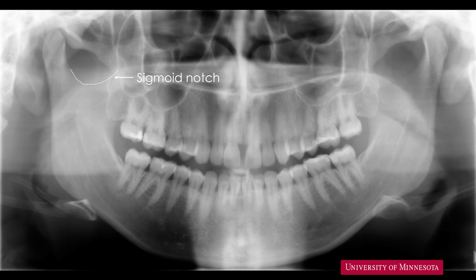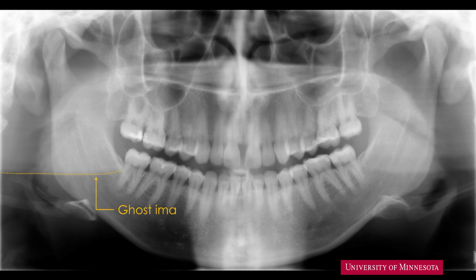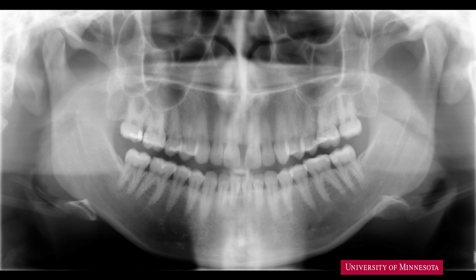The linear entity near the angle of the mandible is the hyoid bone. On the left side, you may also identify the hyoid bone — so the hyoid is recorded twice on the panoramic radiograph. There is a horizontal line of contrast extending past the right ramus — this is the ghost image of the inferior border of the left mandible. Now that we know the sigmoid notch, we can continue further mesially and identify the conical structure — the coronoid process.